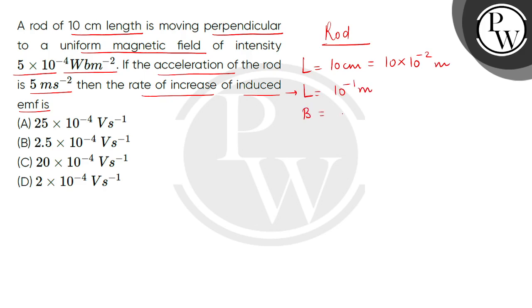Now this magnetic induction is 5 × 10^-4 Weber per meter square, and this rod is moving perpendicular, it means V is perpendicular to B.